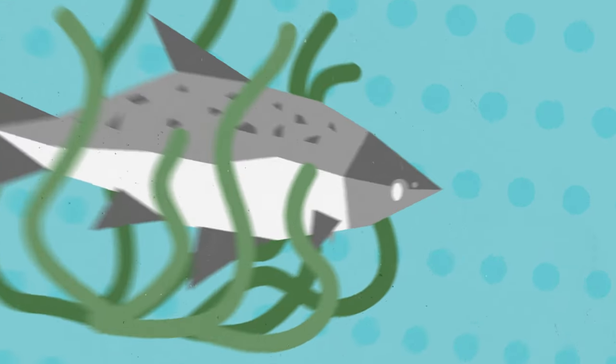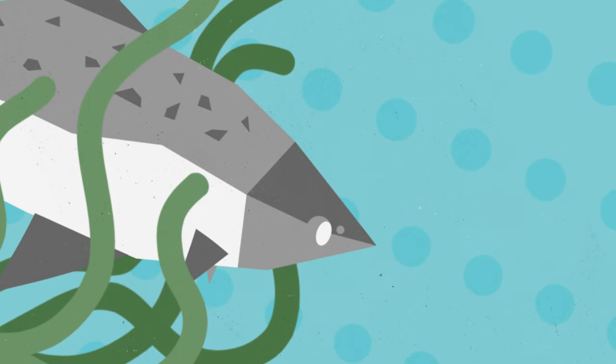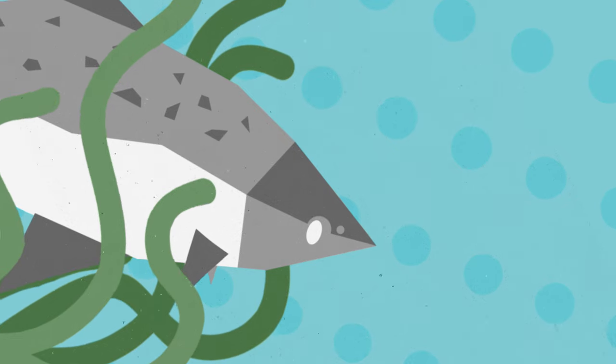But what about fish? Most fish have eyes, but they don't do much other than help find food and avoid predators. So how do they get around?